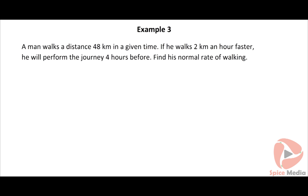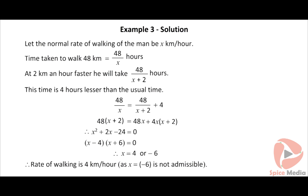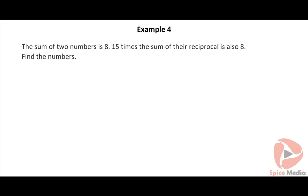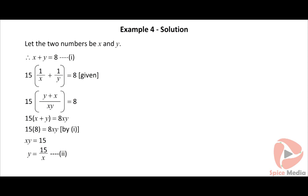Let us see the next example. A man walks a distance of 48 kilometers in a given time. If he walks 2 kilometers an hour faster, he will perform the journey 4 hours before. Find his normal rate of walking. The keywords are: distance 48 kilometers, walks 2 kilometers faster, and 4 hours before. Click on the solution button to view the solution.